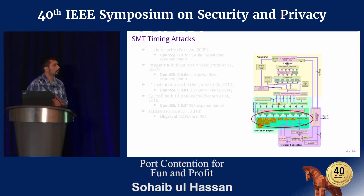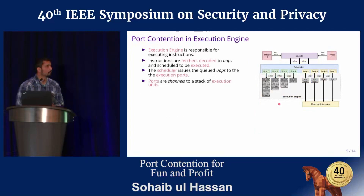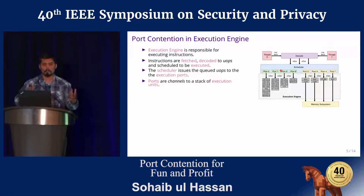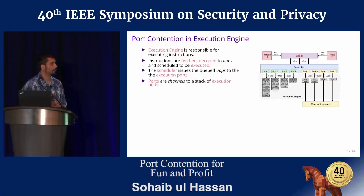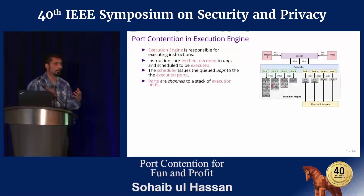Where we come in, we are focusing on the execution engine and how contention on the ports can actually leak information. Let's zoom into the execution engine. Here we have a simplified figure of how an execution engine looks. On a high level, instructions are fetched and decoded into smaller micro-operations. These micro-operations are scheduled to be executed in different execution units. The scheduler keeps a queue of these micro-operations, and they are channeled through different ports to be executed. There is a port contention whenever two or more micro-operations are issued to the same port.